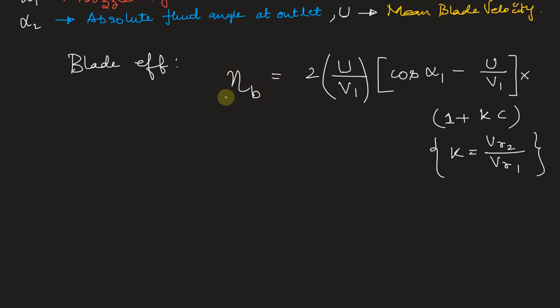Now we need to maximize this blade efficiency. Here, let's substitute u by V1 is equal to rho. So again, we can write the expression of blade efficiency. Eta B is equal to 2 times rho into cos alpha 1 minus rho multiplied by 1 plus kc. Now if we need to maximize this eta B, the blade efficiency, we need to differentiate it with respect to rho, the ratio of mean blade velocity and absolute fluid velocity at the inlet, and we must equate it to zero to get the value of rho for which eta B is maximum.